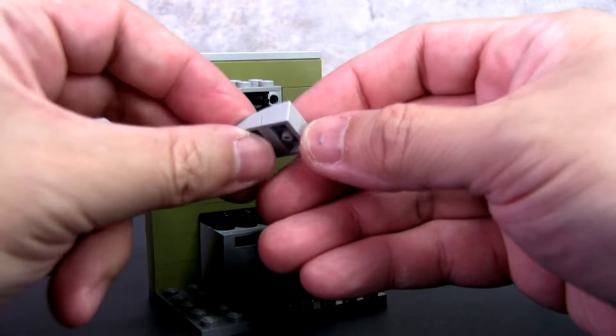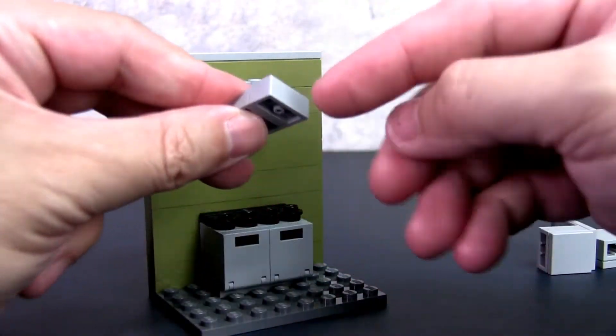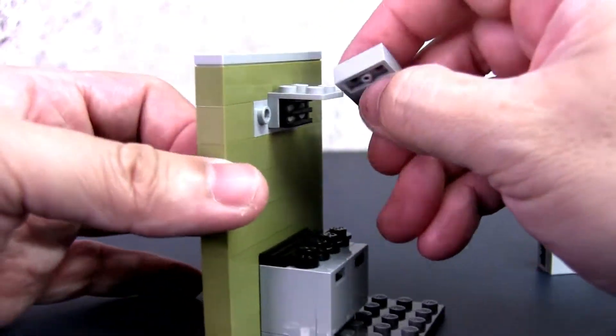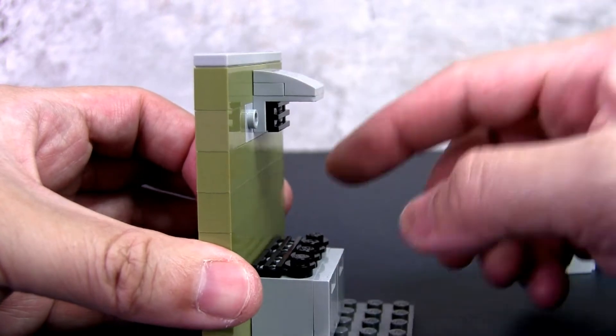For the very top of the hood, this is basically a curved sloped tile with a one by two plate to fill in the space. And this basically just goes on top. So that's the top of the hood.